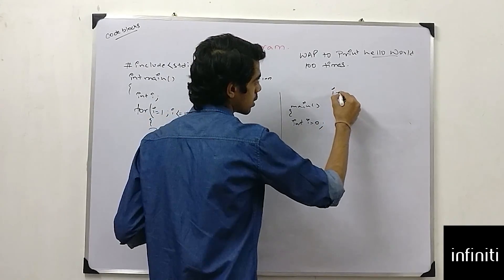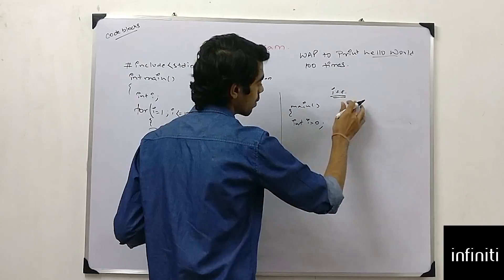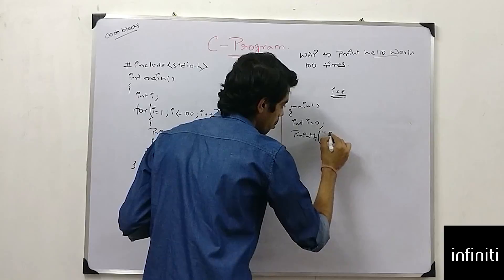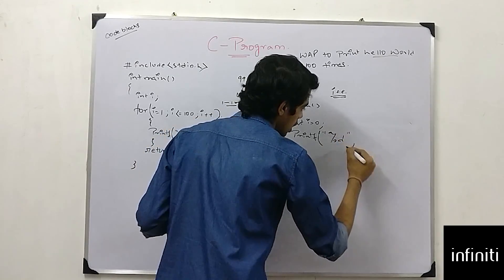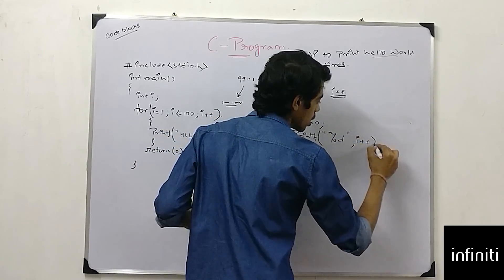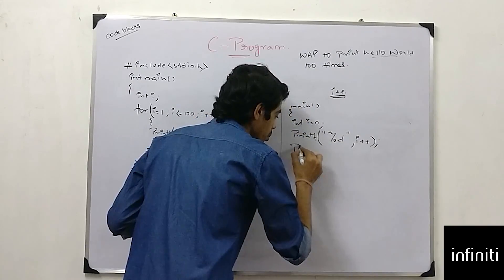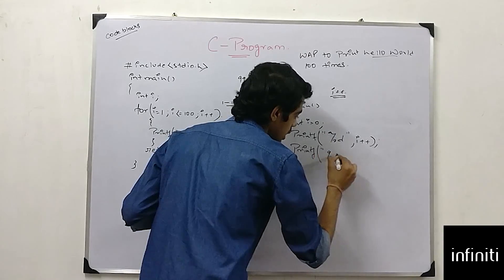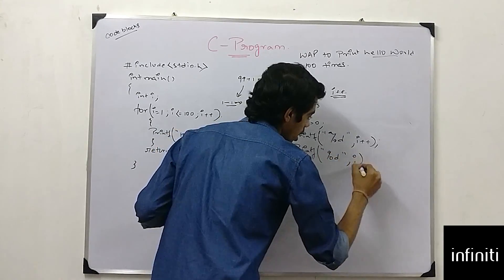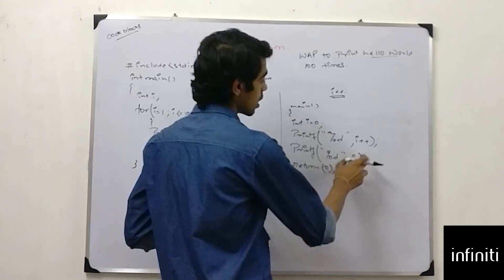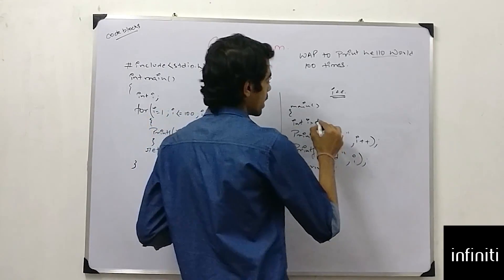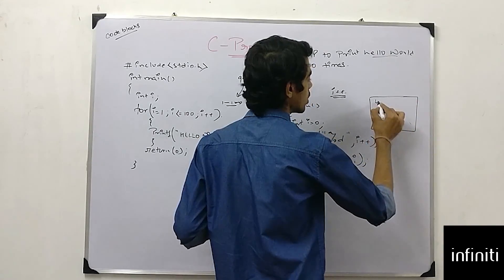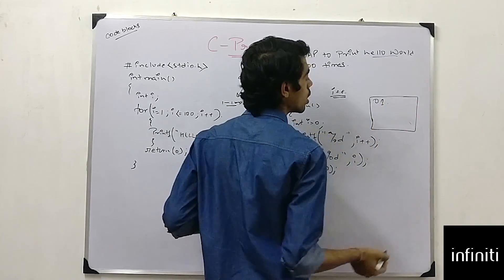Getting to i plus plus, how i plus plus behaves, you should see this process. printf percentage d comma. If I write i plus plus and then printf percentage d comma i. So, what does this mean? I have taken my i is equal to zero. Every console screen, it will show zero, one. Because, at first, I am printing my i zero.